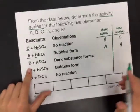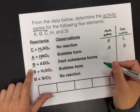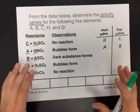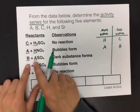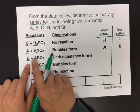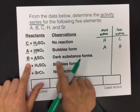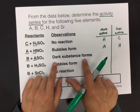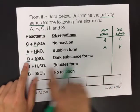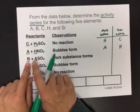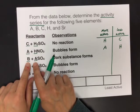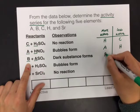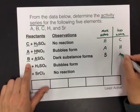Okay, so the next reaction, B reacting with ASO4. Again, these are fake elements, but we don't really need to know what they are in order to interpret the data. We know what it was set up as, and we know, according to the observations, a dark substance forms, which tells me that there was a reaction. So B was able to kick out A in order to produce a chemical reaction. So in that case, B was more active than A.